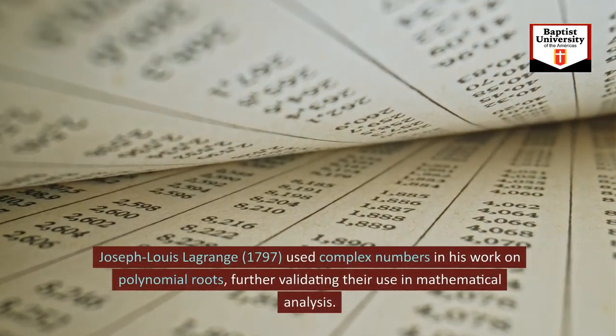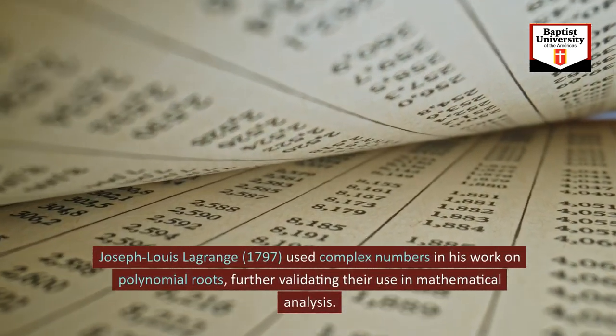Joseph Louis Lagrange, 1797, used complex numbers in his work on polynomial roots, further validating their use in mathematical analysis.